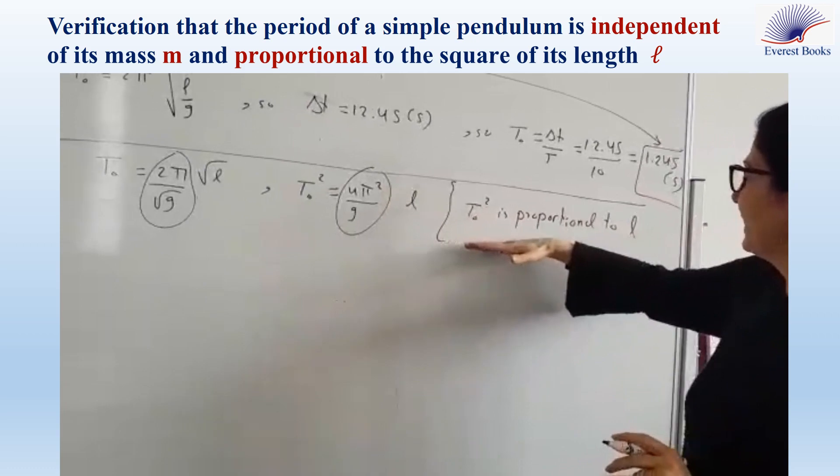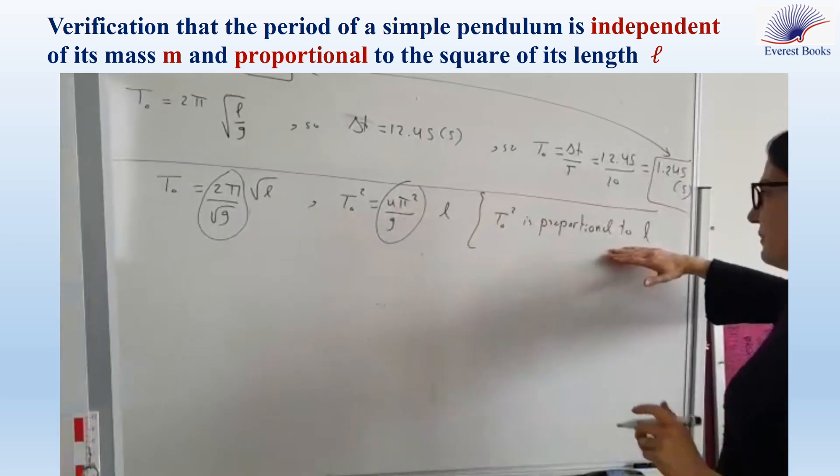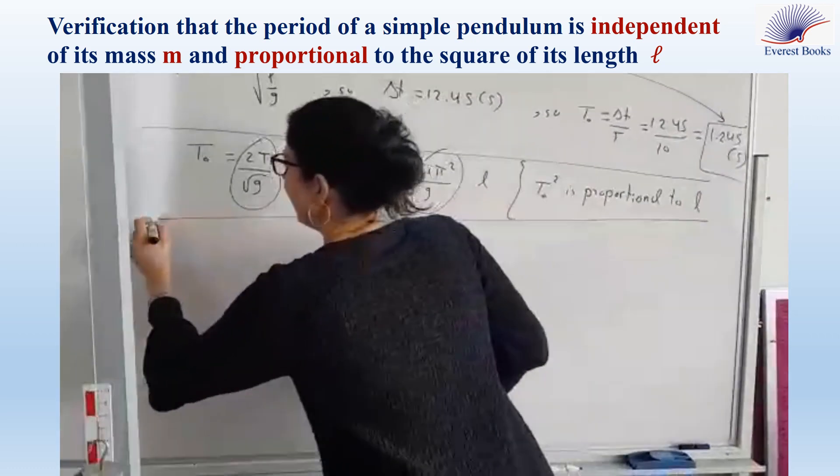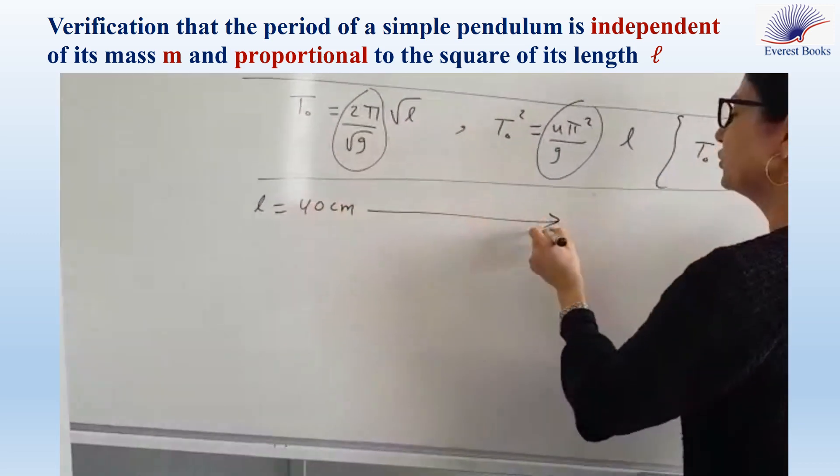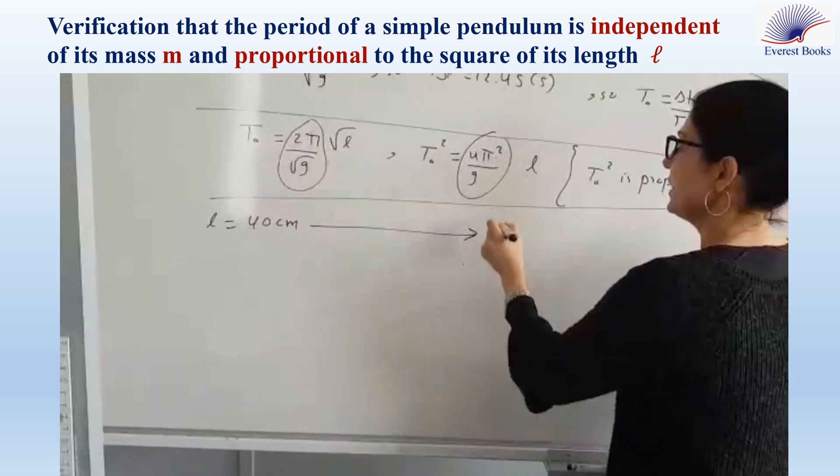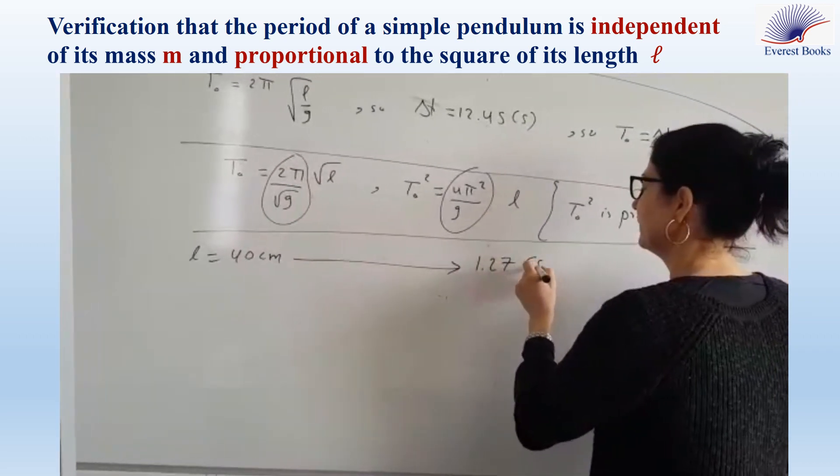So we must verify this result experimentally. Now, the length of our cord is 40 centimeters, and with this length, we have this natural period.